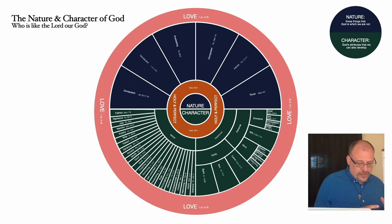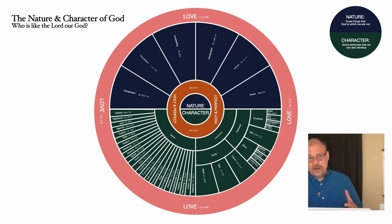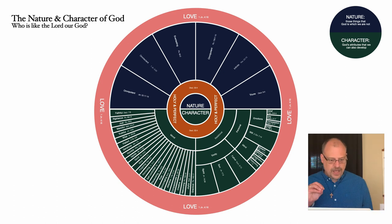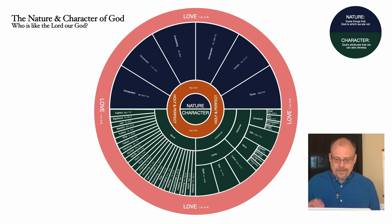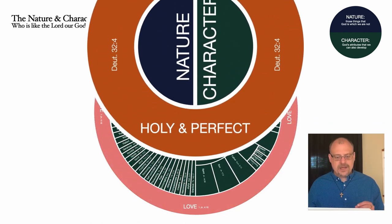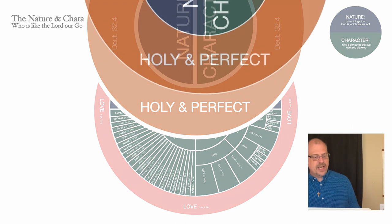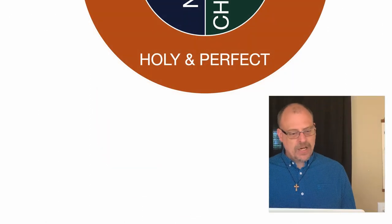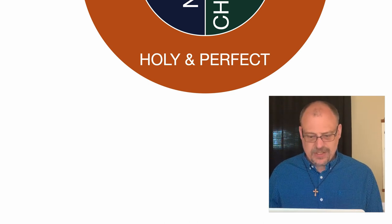Those are the parts of this chart. But you'll notice also in the middle there is this orangey-brown ring, which indicates the reality that God is holy and perfect. God is holy and perfect. And so we need to explore that reality today.